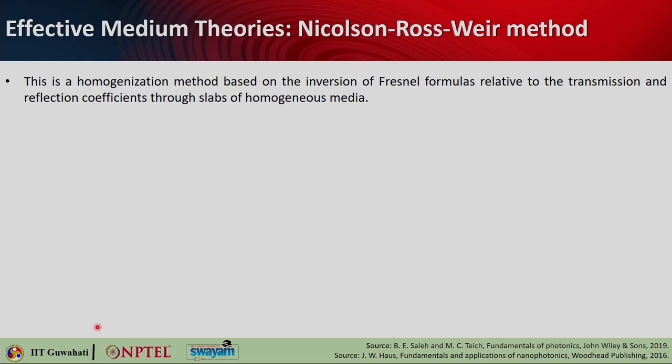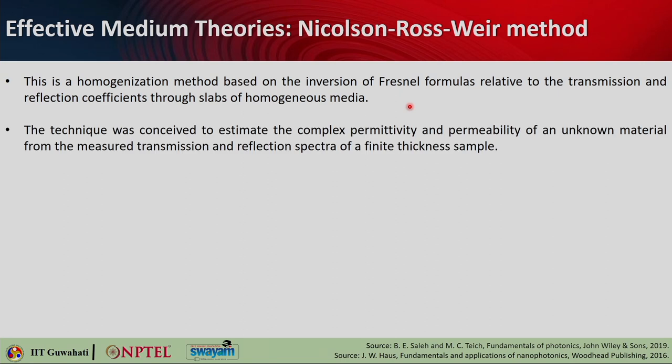The third type of effective medium theory discussed today is the Nicholson-Ross-Weir method. This is a homogenization method based on the inversion of Fresnel formulas. The Fresnel formula allows you to calculate reflection and transmission coefficients at the interface of media with different permittivities. Here, you use the reverse: based on the inversion of Fresnel formulas relative to transmission and reflection coefficients through slabs of homogeneous media.